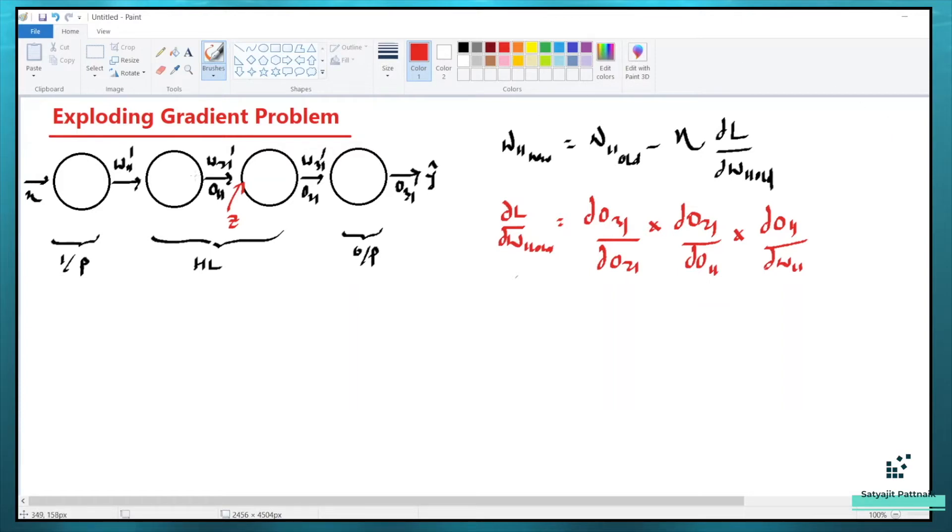So I have defined a small network here, neural network with one input neuron. I have two hidden layers and one output layer. So as you can see, W11 dash, W21 dash, W31 dash, and I have the O11, O21 and O31. So these are the weights which are assigned.